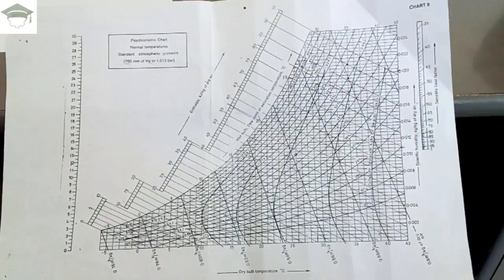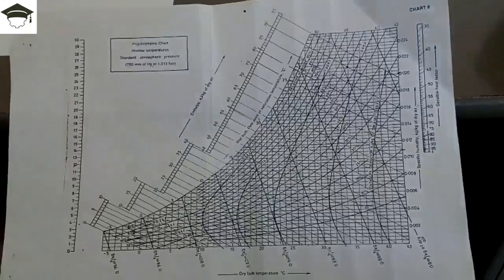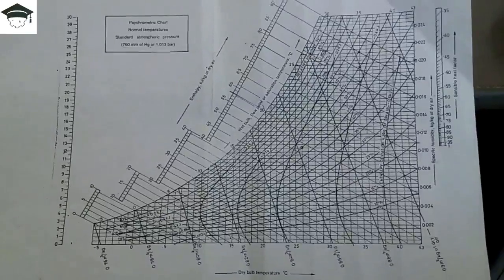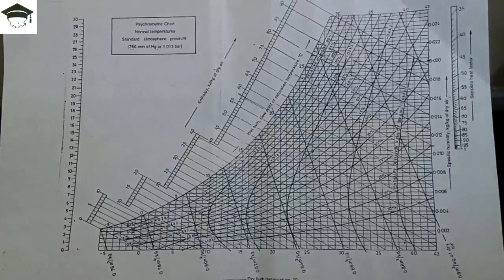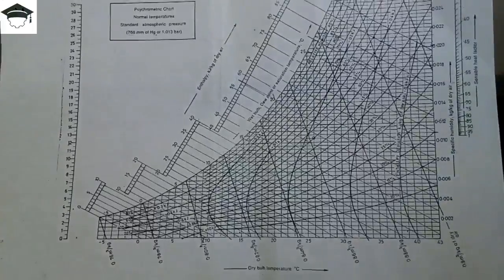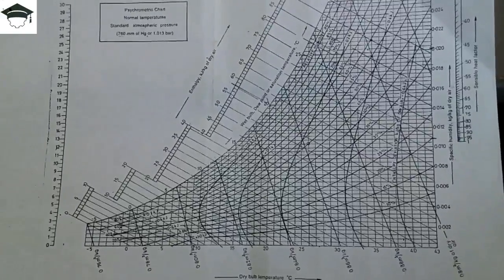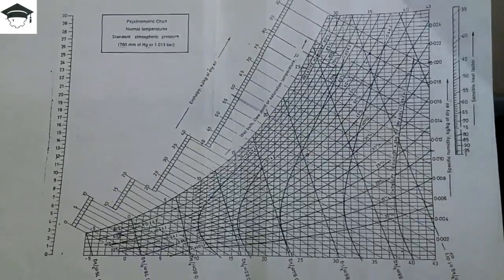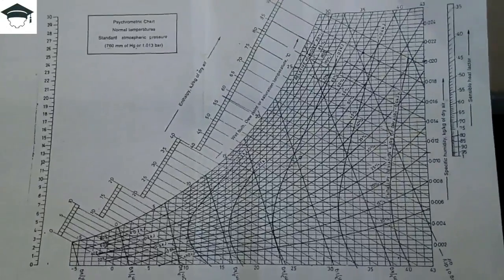Hello and welcome back. In this video I'll be explaining what a psychrometric chart is and how you can read various values using it. A psychrometric chart is a graphical representation of the physical properties of air — including temperature, specific humidity, relative humidity, enthalpy, and sensible heat factor.